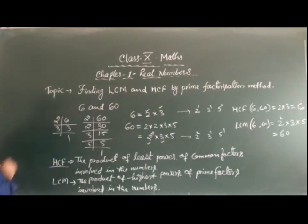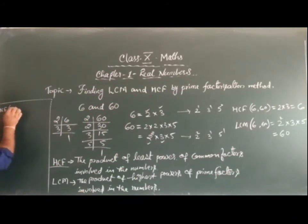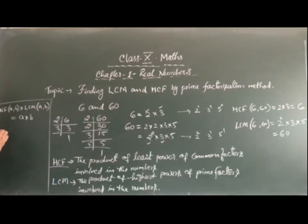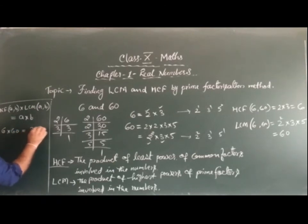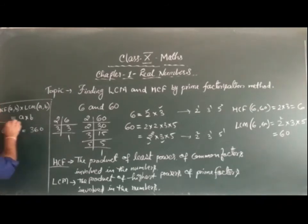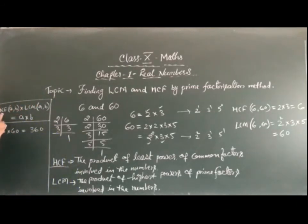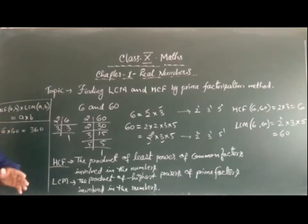We can conclude here that for two numbers A and B: HCF(A, B) × LCM(A, B) = A × B. Here, HCF of 6 and 60 is 6 and LCM is 60, so 6 × 60 = 360. Also, A × B = 6 × 60 = 360. This is the formula to be used in further questions.